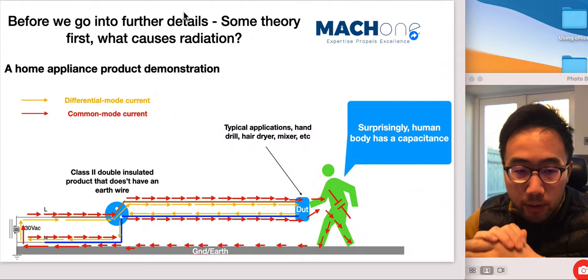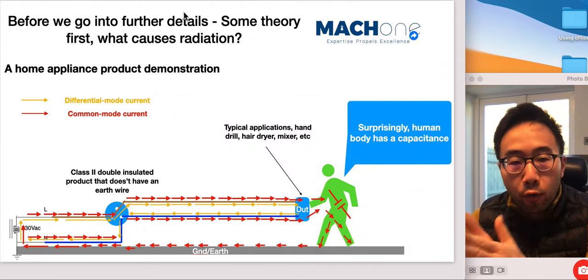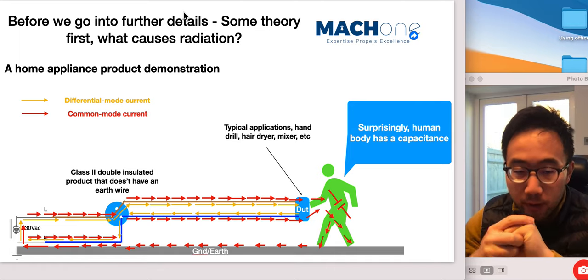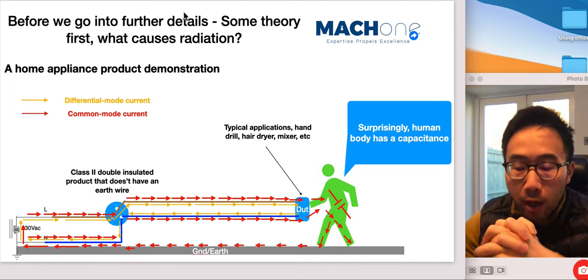EMI noise, we often divide the noise into two types. One is the differential mode noise and then the other one is common mode noise.